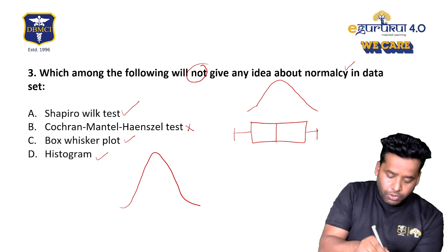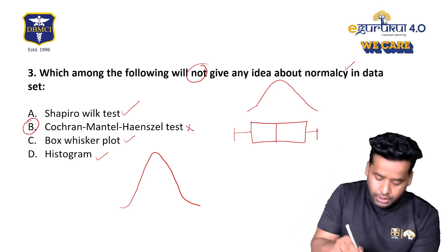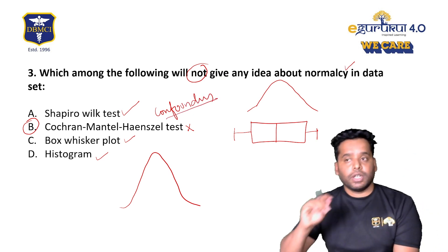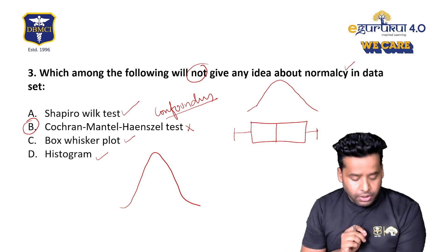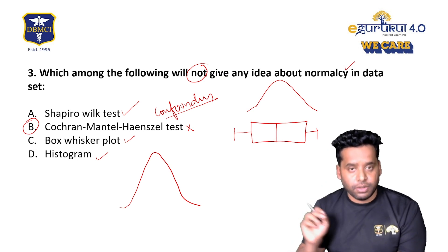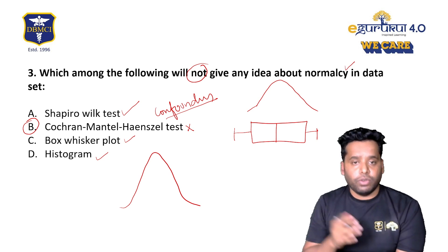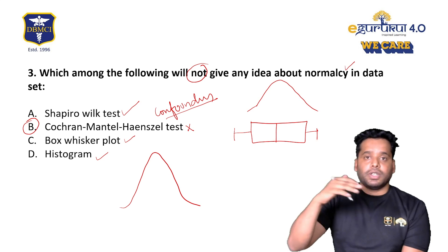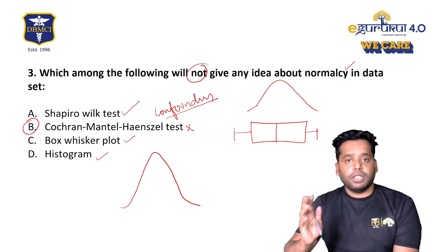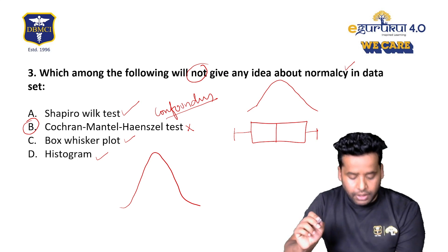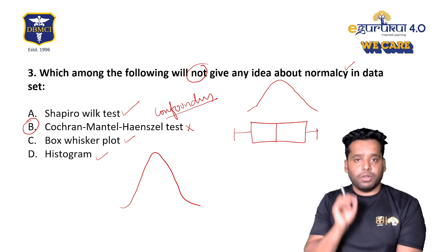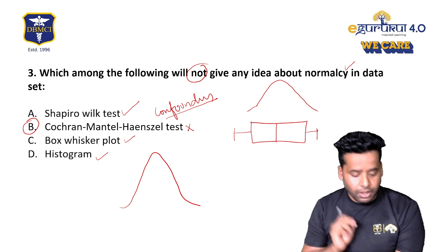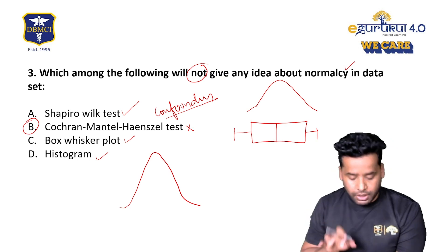Option B is used to assess the effect of confounders in survival analysis. The Cochrane-Mantel-Hansel test can also assess the effect of confounding in multivariable studies — variables affecting at different levels are nullified and neutralized by this test. These are difficult questions asked in NECT exams. Option B will not tell about normalcy of the data.